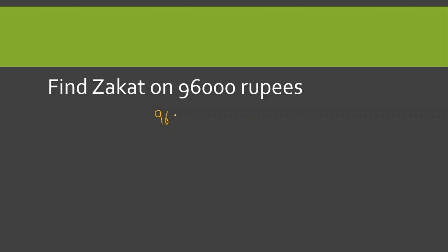Find Zakat on 96 thousand۔ تو again 96 thousand کو آپ 40 پہ divide کریں۔ یہ zero اس کے ساتھ cut جائے گا اور 4 کا table سے 96 پہ آپ کے پاس 24 آ جائے گا۔ 24 کے ساتھ دو zeros رہتے ہیں تو answer آ جائے گا twenty four hundred۔ یعنی کہ 96 thousand پہ جو Zakat ہے وہ 2400 روپیز ہے۔